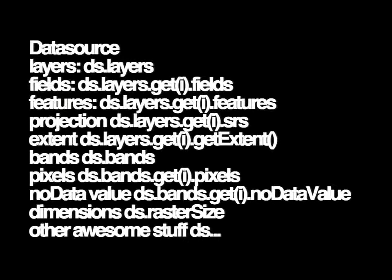For raster data, you can obtain or access the bands, even individual pixels, the no-data value, and dimensions like ds.rasterSize — that's the pixel resolution. That's actually what we use in Mapnik Omnivore to figure out what the optimal minimum and maximum zoom should be. There's a lot of other data you can access as well.